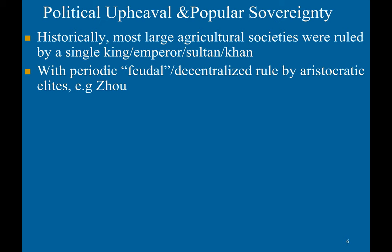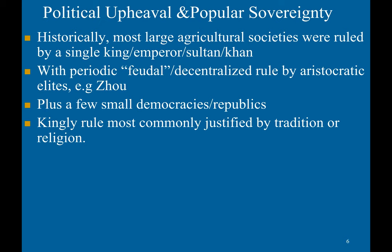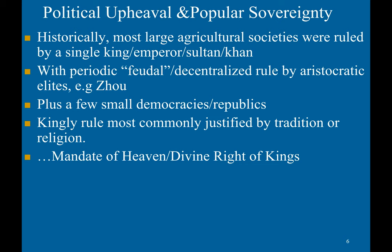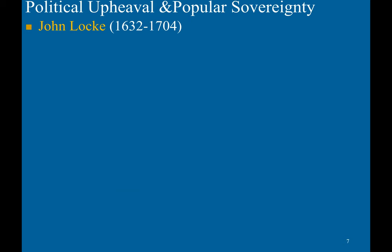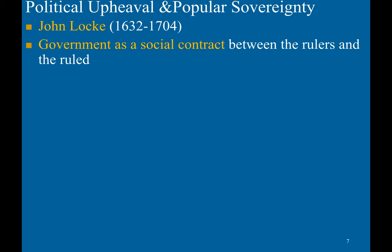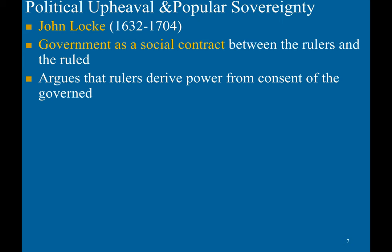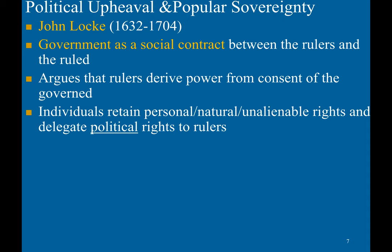Of course, you did have a few democracies and republics sprinkled in there, but most of these societies were pretty autocratic. Kingly rule was most commonly justified by tradition or religion — for example, the mandate of heaven and the divine right of kings. However, Enlightenment thinkers began to question these long-held ideas of sovereignty. One of the most important philosophers was John Locke, who thought of government as a social contract between the rulers and the ruled. He argued that rulers derive power from the consent of the governed, that individuals retain personal, natural, unalienable rights, and delegate political rights to rulers in exchange for protection of those rights.